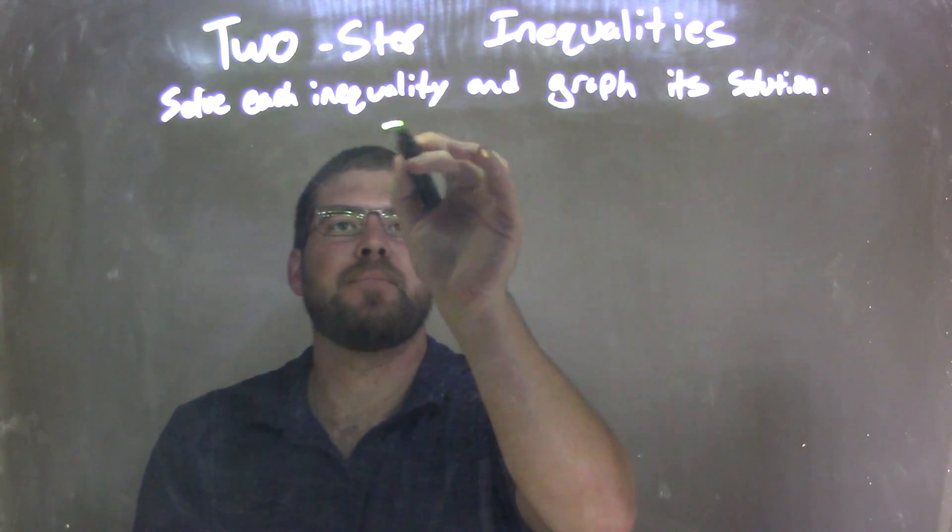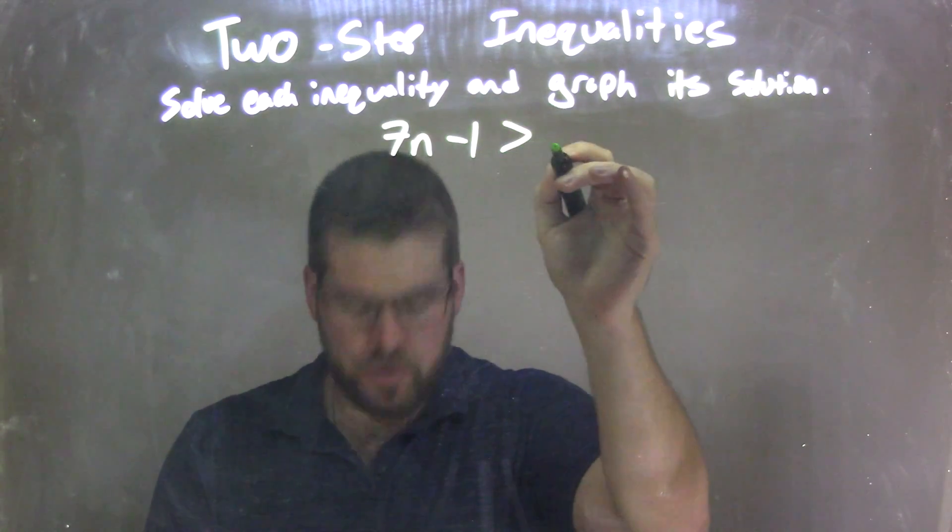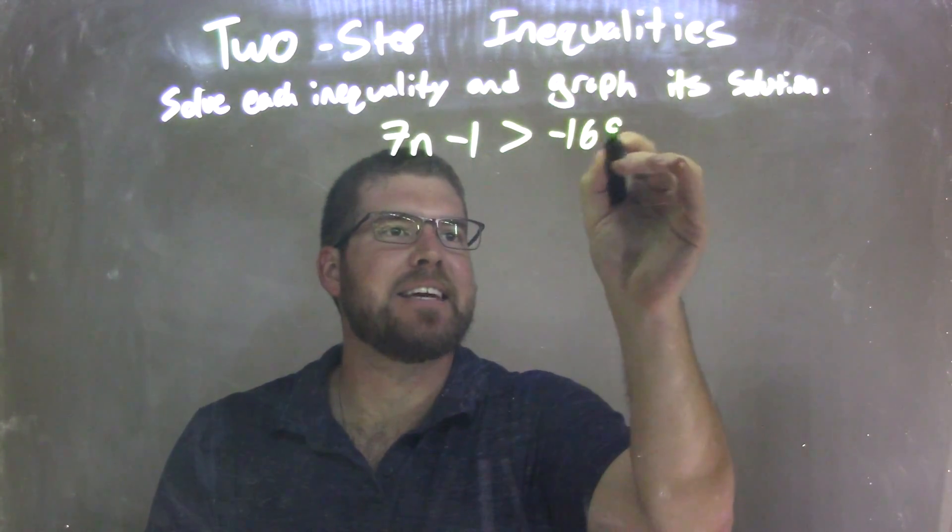We're going to solve each inequality and graph its solution. So if I was given this inequality, 7n minus 1 is greater than negative 169.